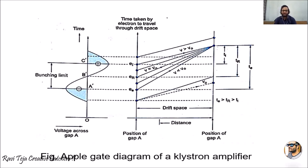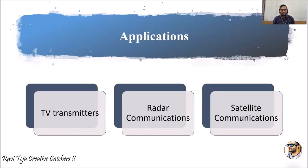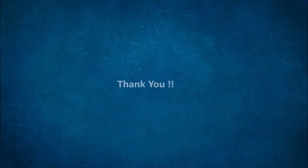This is the graphical representation of the whole concept of a two-cavity klystron amplifier. The applications of the two-cavity klystron amplifier include TV transmitters, radar systems, and satellite communications.